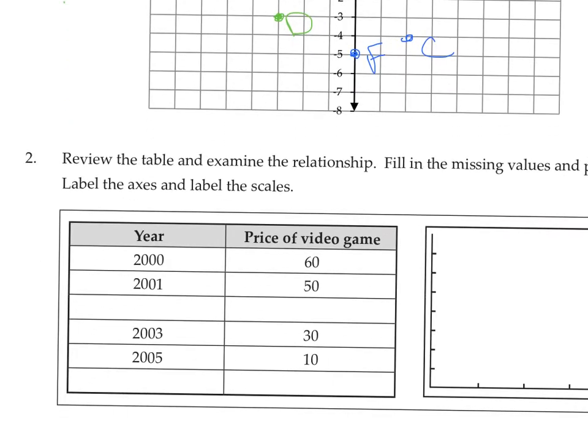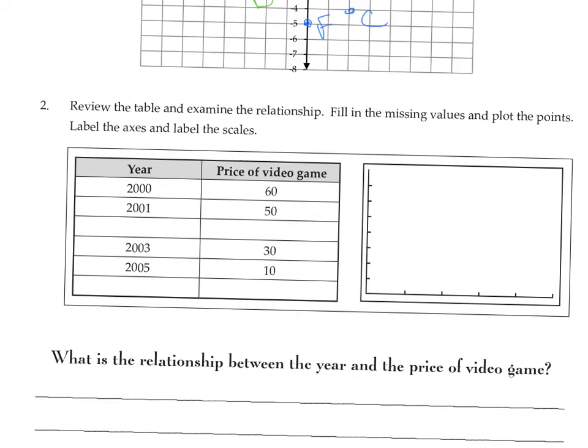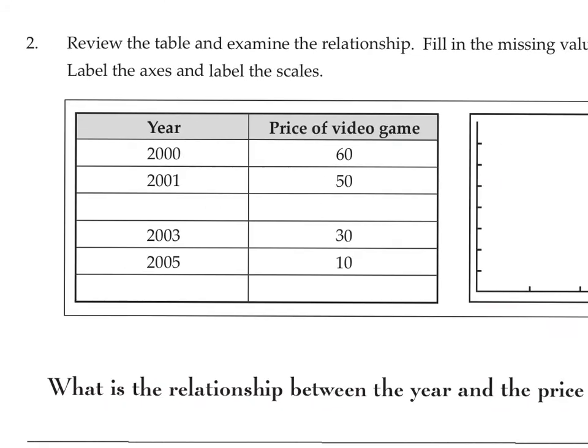Question 2 says review the table and examine the relationship. Fill in the missing values and plot the points. This was similar to the water and gallons question we did in the lesson. We have years: 2000, 2001, 2003, 2005. There's a year missing here, which should obviously be 2002. And down here looks like we're missing 2006.